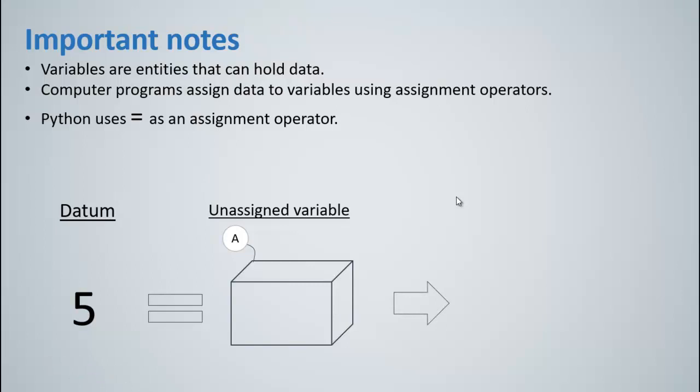And the result would be a equals to 5. So that's how Python assigns the datum, which is 5, an integer to the variable a.